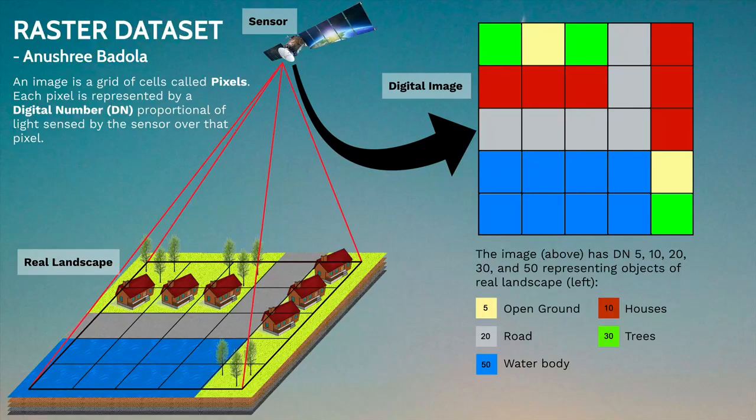We can see here that the number 5 represents open ground in the image, 10 represents houses, 20 represents roads, 30 represents trees, and 50 represents water body.